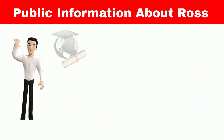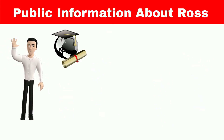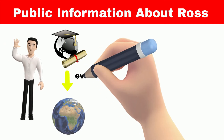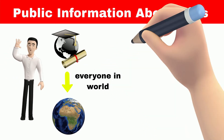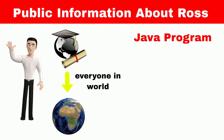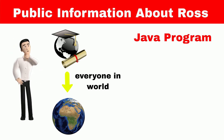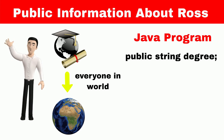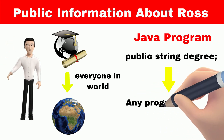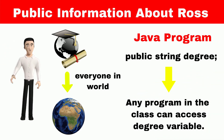For example, Ross has two PhD degrees, so he wants this information to be shared with everyone in the world — that is, this information should be publicly available. Similarly, in a Java program, the information that we want to share with every other class will be declared as public. If we use public with any variable, then any class in the program can access that variable.